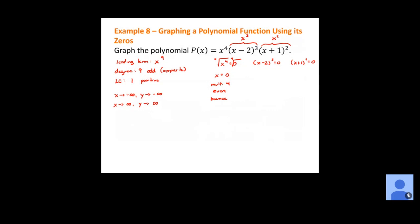For the next factor, x minus 2 cubed equals zero. Taking the cube root gives us x minus 2 equals zero, so x equals 2. The multiplicity comes directly from the exponent, so since this was cubed, the multiplicity is 3.